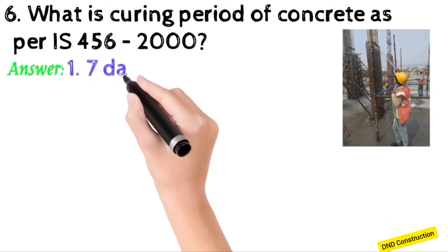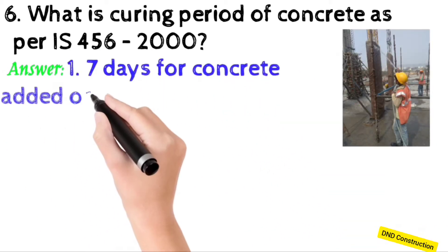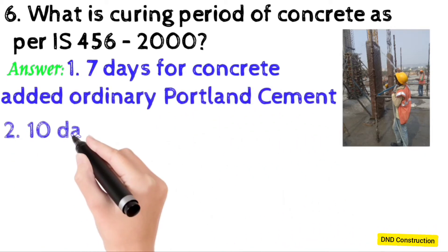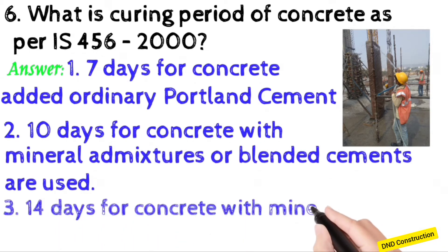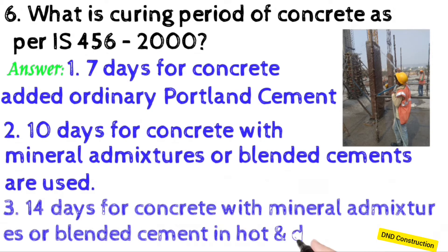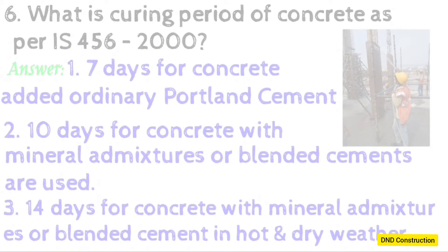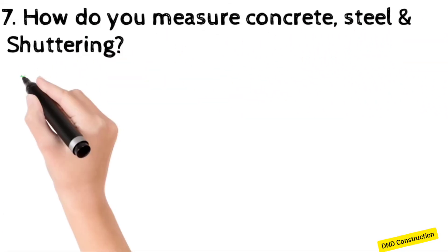7 days for concrete with ordinary Portland cement. 10 days for concrete with mineral admixtures or blended cements. 14 days for concrete with mineral admixtures or blended cement in hot and dry weather. How do you measure concrete, steel, and shuttering?